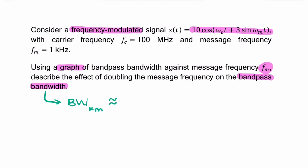...is approximately 2 times (1 plus the modulation index) times the message bandwidth. Your modulation index here we can write as the ratio of the frequency deviation to the message frequency, so you can simplify that to be 2 times (fm plus delta F). So that's your bandwidth.